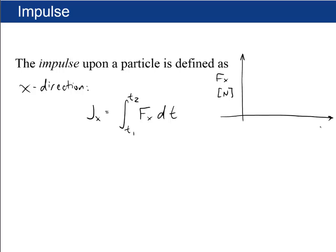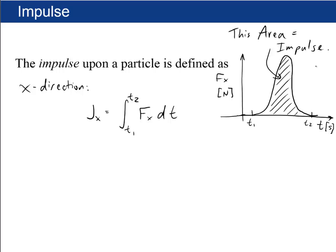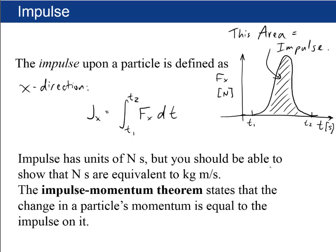If you make a plot of f sub x in newtons versus time in seconds, the force might go up for a while and then down. If you integrate from t1 to t2, the area under that curve is the impulse. Impulse has units of newtons times seconds, equivalent to kilograms meters per second. The impulse momentum theorem states that the change in a particle's momentum equals the impulse on it. Delta p equals j.